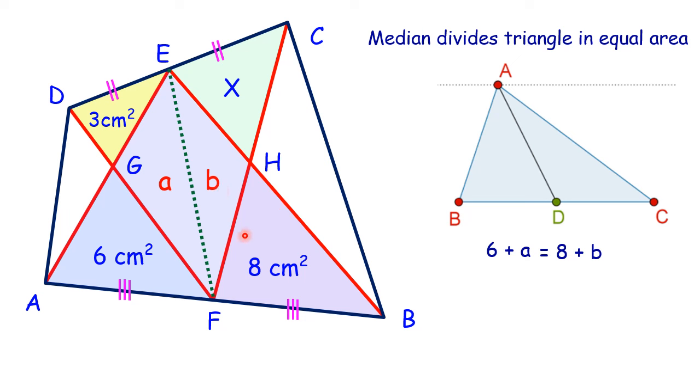Same way, if we look at the other triangle, that is triangle DCF, in this EF is again the median, and area 3 plus A will be equal to X plus B.